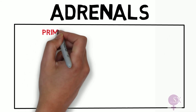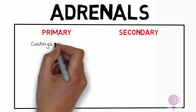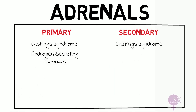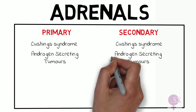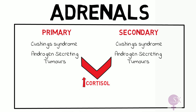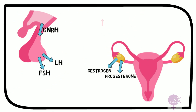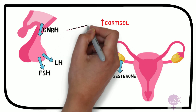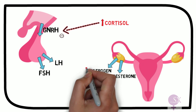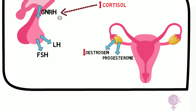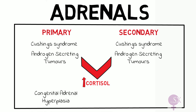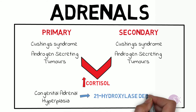Next, we have the adrenal causes. We have Cushing syndrome, causing both primary and secondary amenorrhea, as well as androgen-secreting tumors. Both conditions are characterized by high levels of cortisol. High levels of cortisol inhibit the release of GnRH from the hypothalamus, eventually resulting in low levels of oestrogen. Additionally, congenital adrenal hyperplasia, an autosomal recessive condition resulting in 21-hydroxylase deficiency, can result in primary amenorrhea, as this enzyme is involved in sex steroid synthesis, so low levels of sex steroids result in amenorrhea.